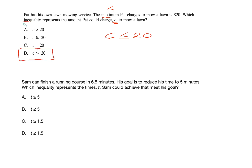Another keyword here was inequality — that word would have excluded option C because it has an equal sign, meaning C represents an equation. Next: Sam can finish a running course in 6.5 minutes. His goal is to reduce his time to 5 minutes. Which inequality represents times T Sam could achieve that meet his goal? The keyword is reduce, meaning less than or equals to 5, so we're looking for T ≤ 5. The answer is B.